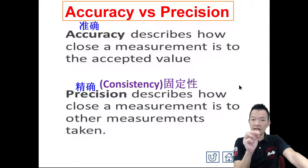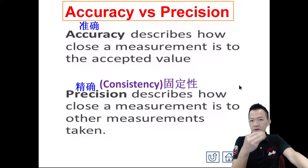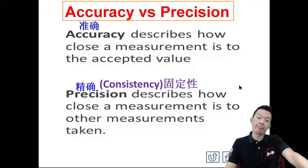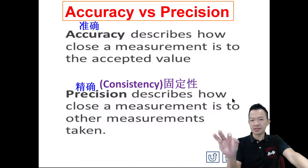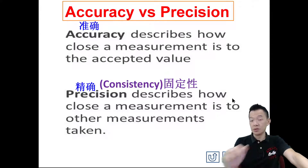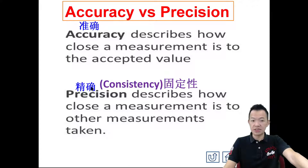Precision means your measured answers compared to your other previously measured answers — how close they are to each other, whether there is that consistency, that the answers are always about the same. If they are very different, then there is no precision, no consistency.